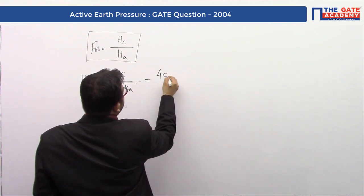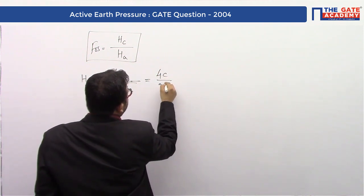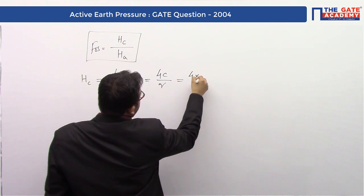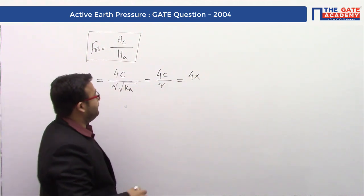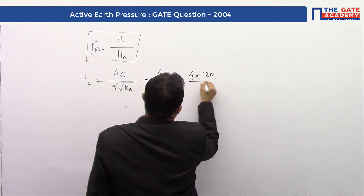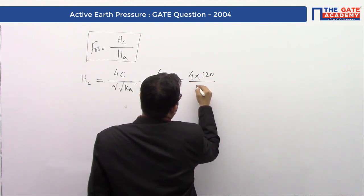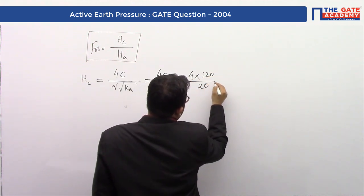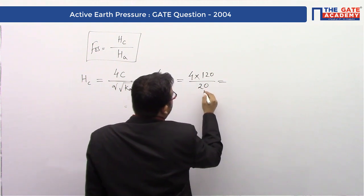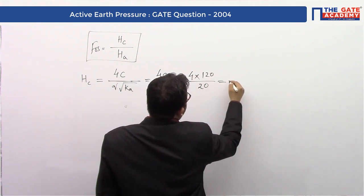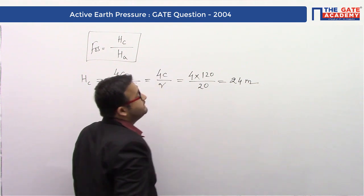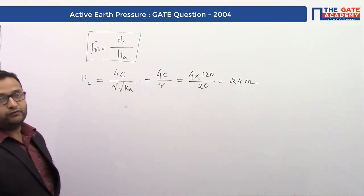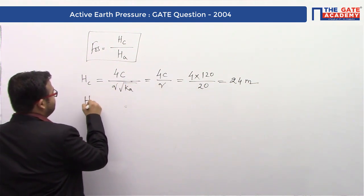Substituting the values: critical height equals 4c/γ, which is 4 times 120 divided by 20. This gives a critical height of 24 meters.